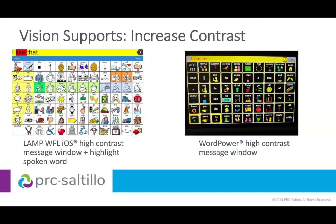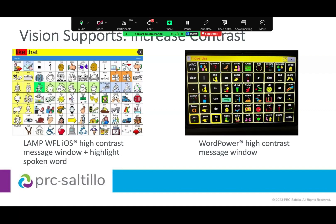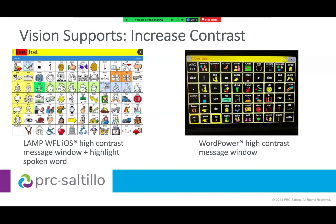Another place to increase contrast is in the message window. In LAMP Words for Life — whether the regular LAMP or LAMP VI — you can change the message window to have a high contrast yellow background. There's also a setting that highlights the word as it's spoken, and you can change the highlight color; I have red chosen, but other colors are available. WordPower also offers a high contrast message window, as do other PRC-Sotillo language systems.